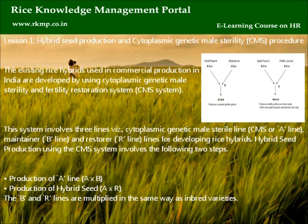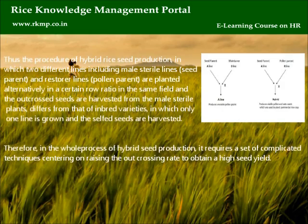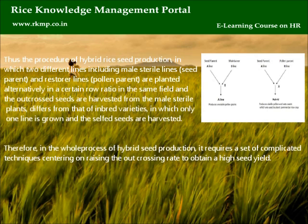Hybrid seed production using the CMS system involves two steps: production of the A-Line (A × B) and production of hybrid seed (A × R). The B and R lines are multiplied in the same way as inbred varieties. The procedure involves planting male sterile lines (seed parent) and restorer lines (pollen parent) alternatively in a certain row ratio in the same field, and outcrossed seeds are harvested from the male sterile plants, differing from inbred varieties where only one line is grown and self-fed seeds are harvested.